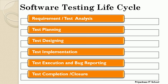The sixth phase is Test Completion or Test Closure. This phase is mostly done when the software is released. All test ware is collected from completed test activities for future reference. This phase is about process improvement tasks. Major activities include: checking that all defect reports are closed, creating a test summary report, finalizing and archiving the test environment, test data, and test ware for future reference, and handing over documentation to the maintenance team, project team, or client to improve test process maturity.